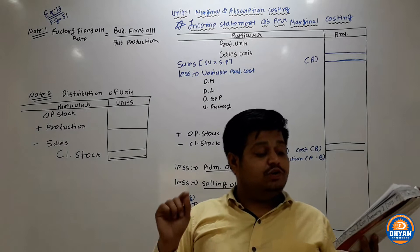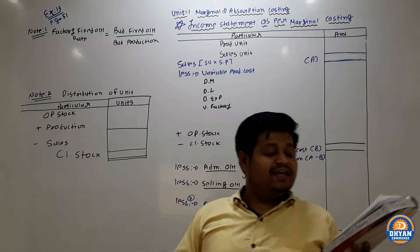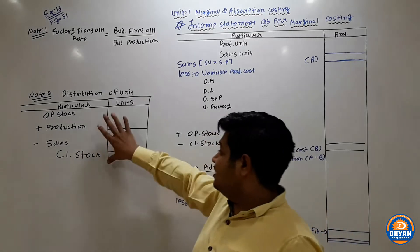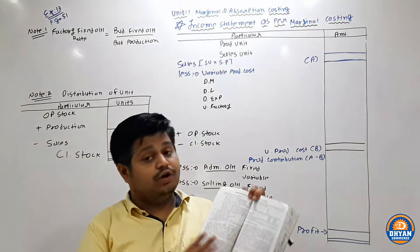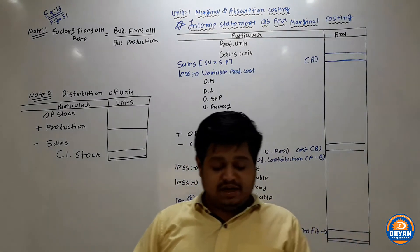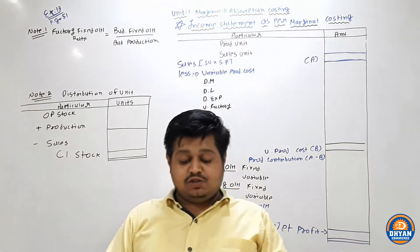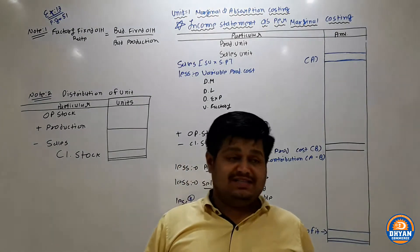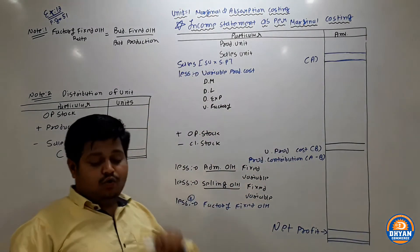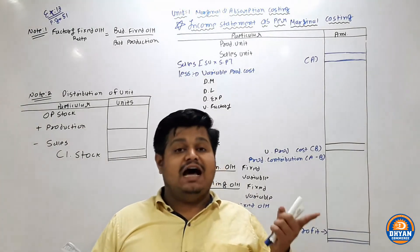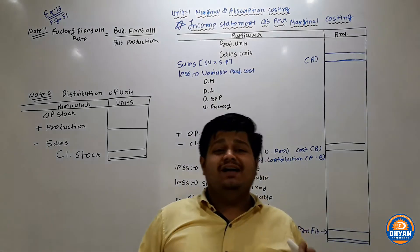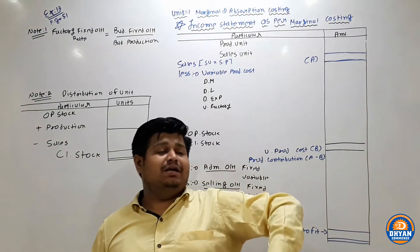Unit of closing stock is 10% of production. Unit of opening stock is 25% of sales. This is all unit information for our Note 2. Information 4 is a bit different: as per marginal costing, cost of goods sold uses variable production cost only, distributed by a given ratio.